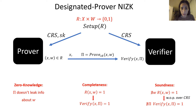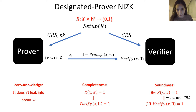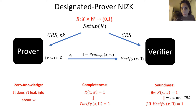One can think of other models. There is standard non-interactive zero knowledge in which there is only the CRS and no secret key. There is the designated prover model where the prover gets a secret key. There is also the designated verifier model where the verifier gets a secret key, and then that secret key guarantees the soundness. And there is the most generalized model, the NIZK preprocessing, where both parties get designated keys.